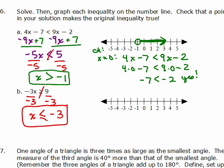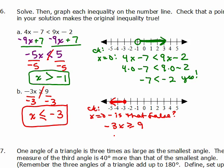It's less than or equal to negative 3, so negative 3 is one of the solutions — we put a dot on it and go to the left. Now 0 is not a solution, right? So if we plug in 0, we should get a false. Checking x equals 0 in the original — negative 3 times 0 is greater than or equal to 9 — gives 0 is greater than or equal to 9. That's false, so it's correct that 0 is not a solution, and we have the arrow going the right direction.